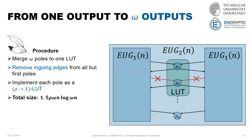That's how we construct ω outputs in our universal circuit. With this construction we get a total size of 4.5 ρ ω n log(ω n).